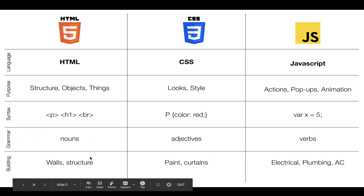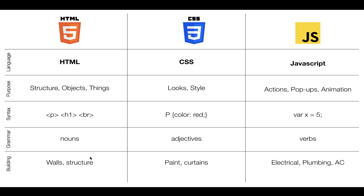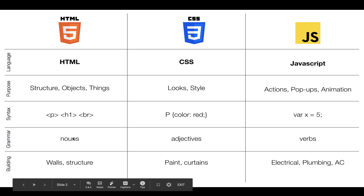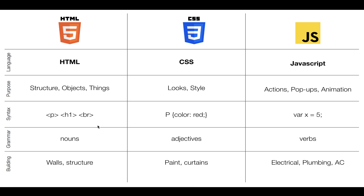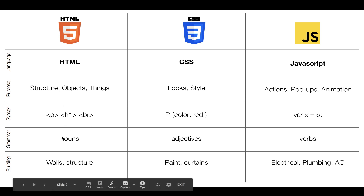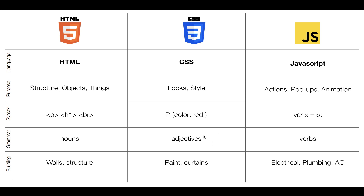So if we were thinking about this in terms of a language, just like English and Spanish have different grammars, we know that nouns refer to things, objects, people, and places — so that's how you can kind of think of HTML.